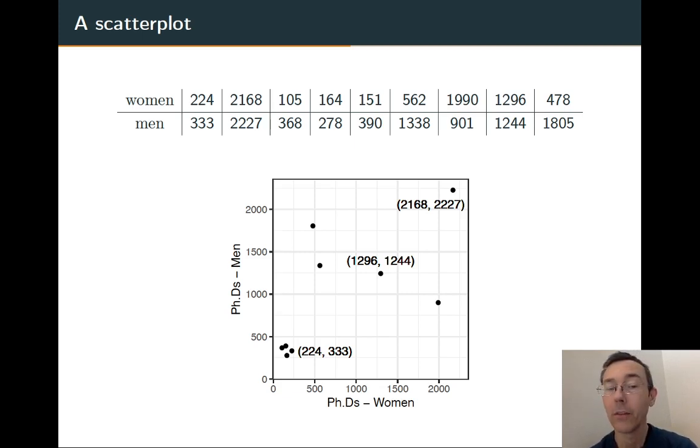It's a scientific field where in 2005, 2168 PhDs were awarded to women, and 2227 were awarded to men.